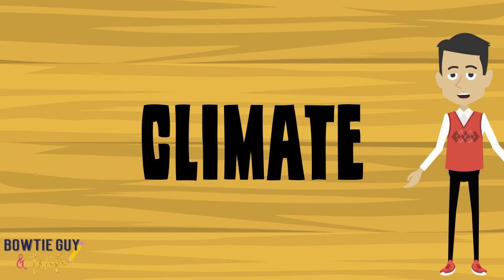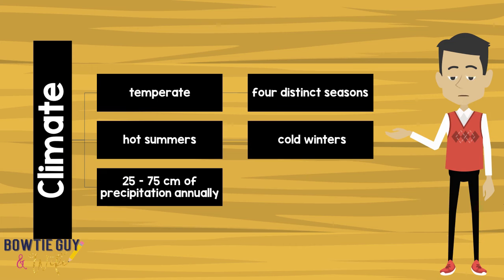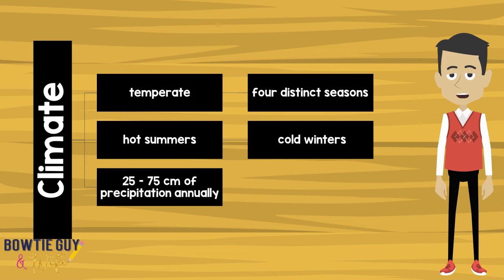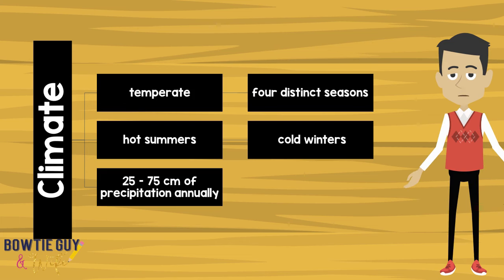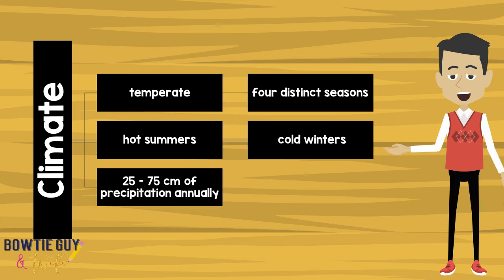How could one describe the climate of the Plains American Indians? They had a temperate climate, which meant they had four distinct seasons. It was cool in the winter and very hot in the summer. They had 25 to 75 centimeters of precipitation annually.